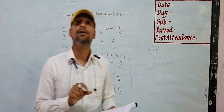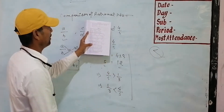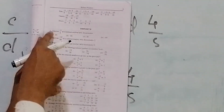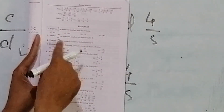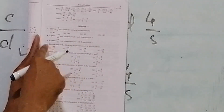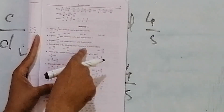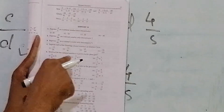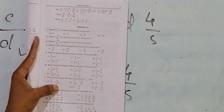Question number 4 is for students. In Exercise 1A, question number 4: express each of the following rational numbers in standard form. For example, take minus 12 by 30. We need to change this to standard form, so I am going to find the GCD of 12 and 30.